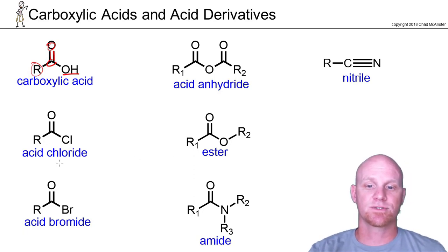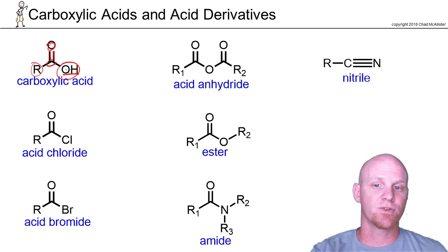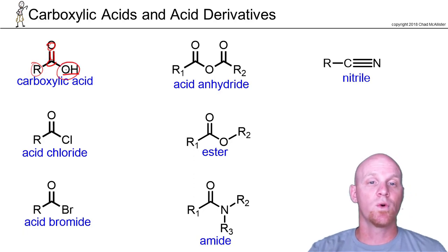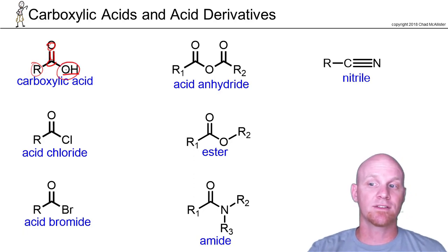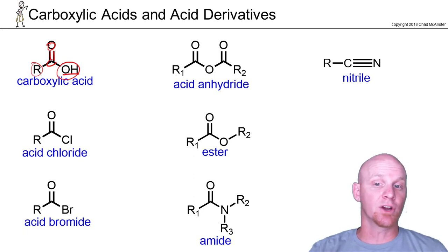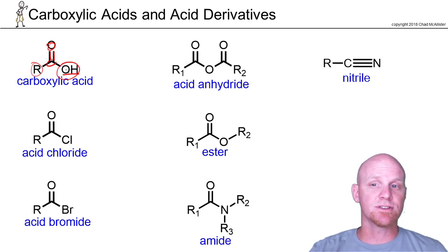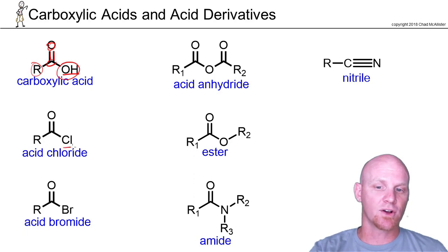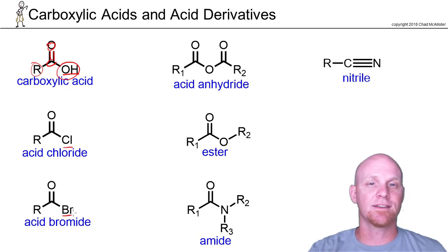We'll start with the acid chloride. The big difference here is you're just going to replace the hydroxyl group with something else. That something else, most of the time, we'll view as some form of leaving group, and we can just do all sorts of substitutions to interconvert them. So if instead of an OH you've got a chlorine or a bromine, those are acid halides — acid chlorides and bromides specifically.